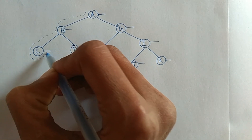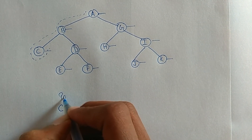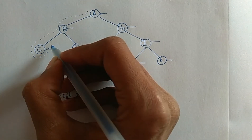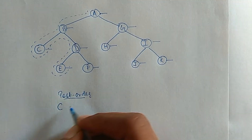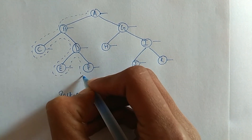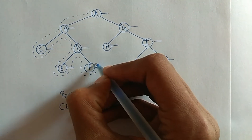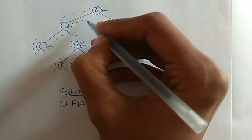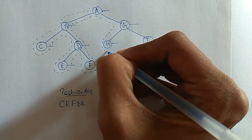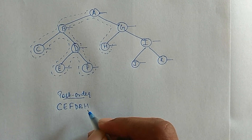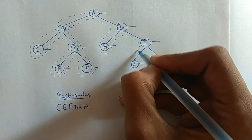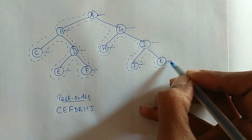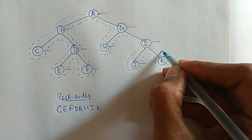It intersects node C first, so the post-order starts with C. Then it intersects node E, then node F, then node D, then node B, then node J, then node K.